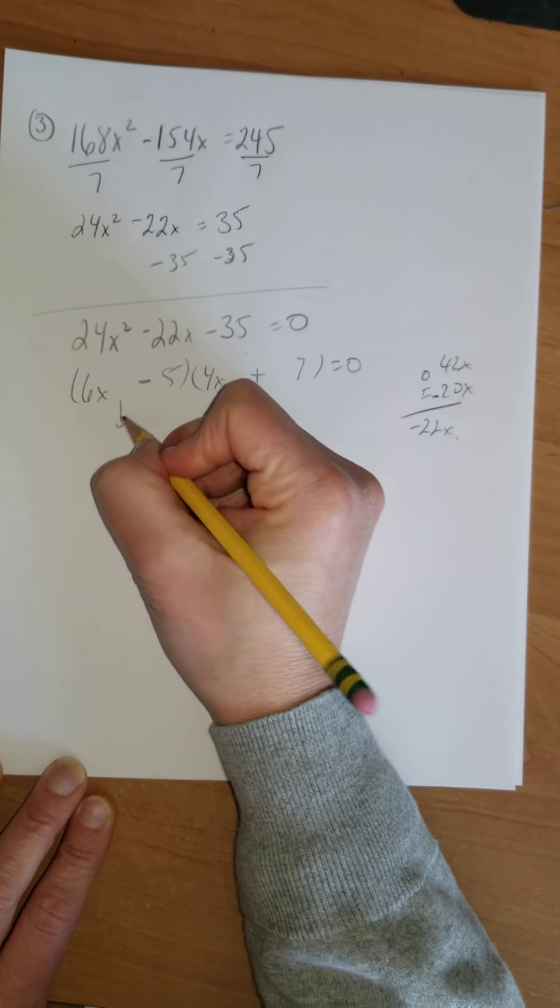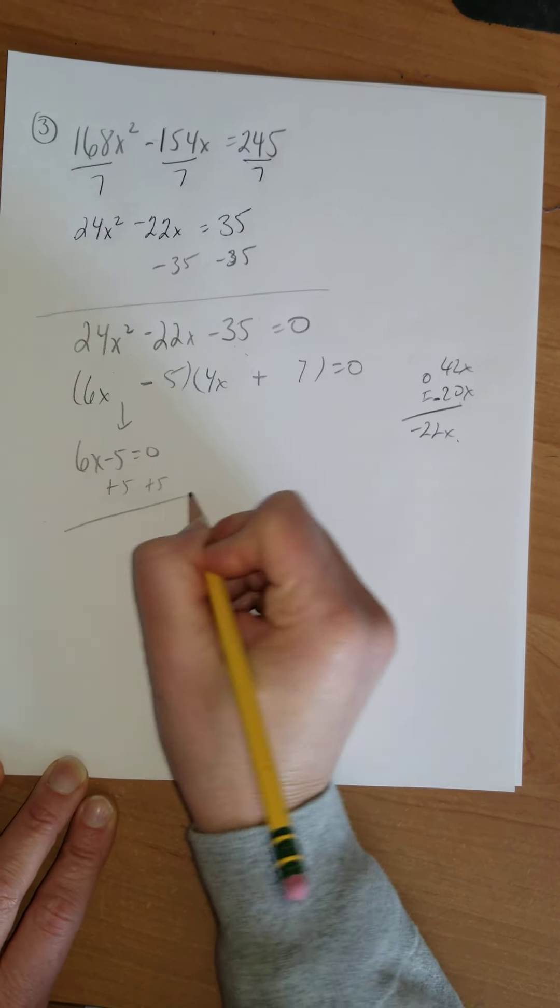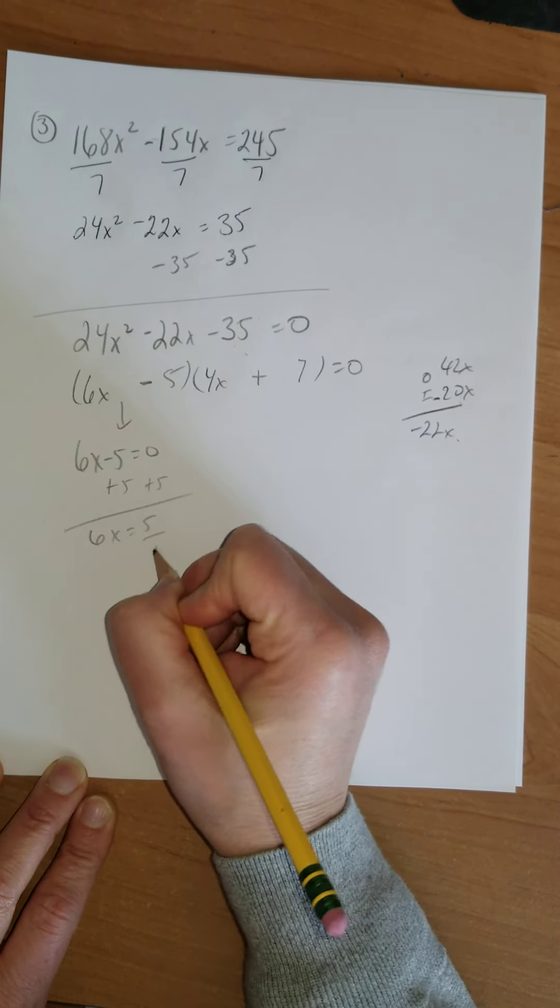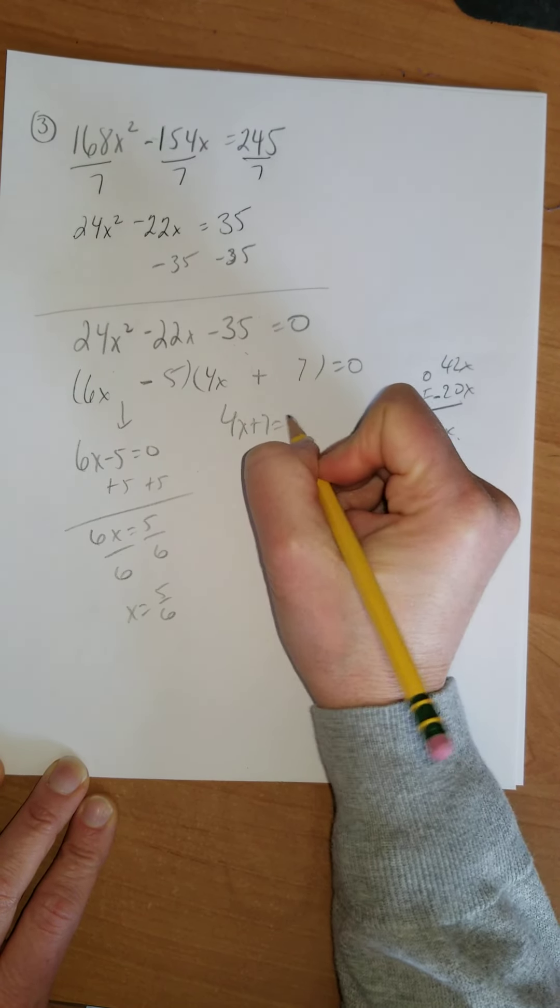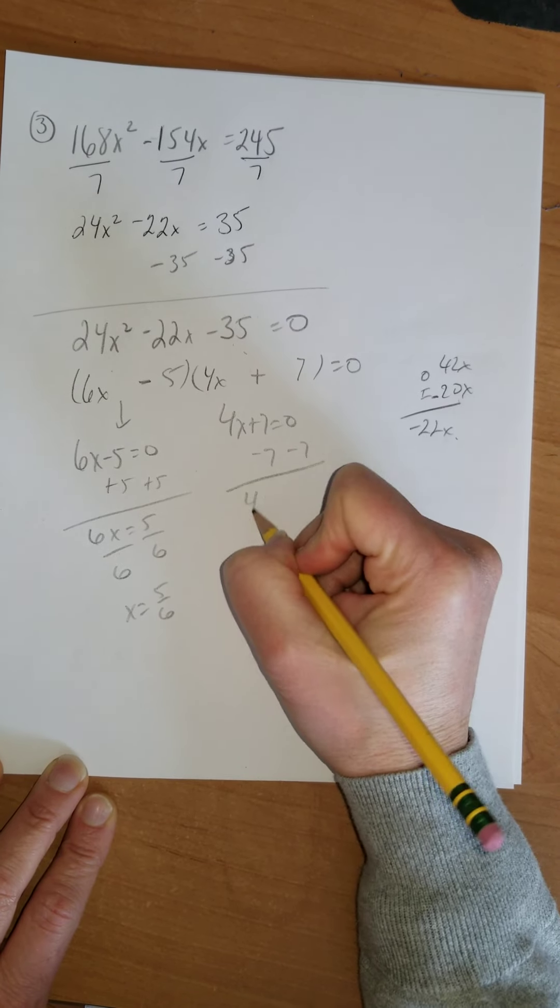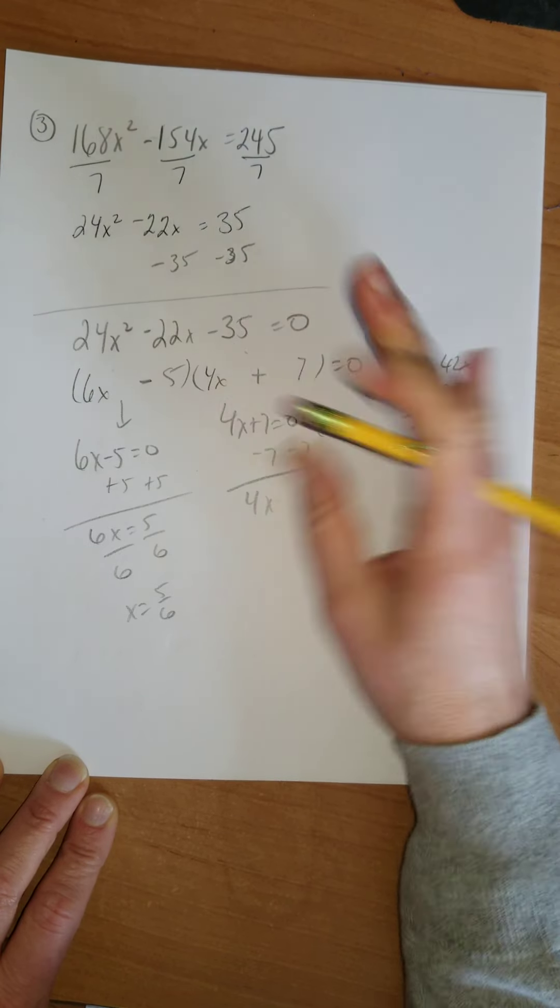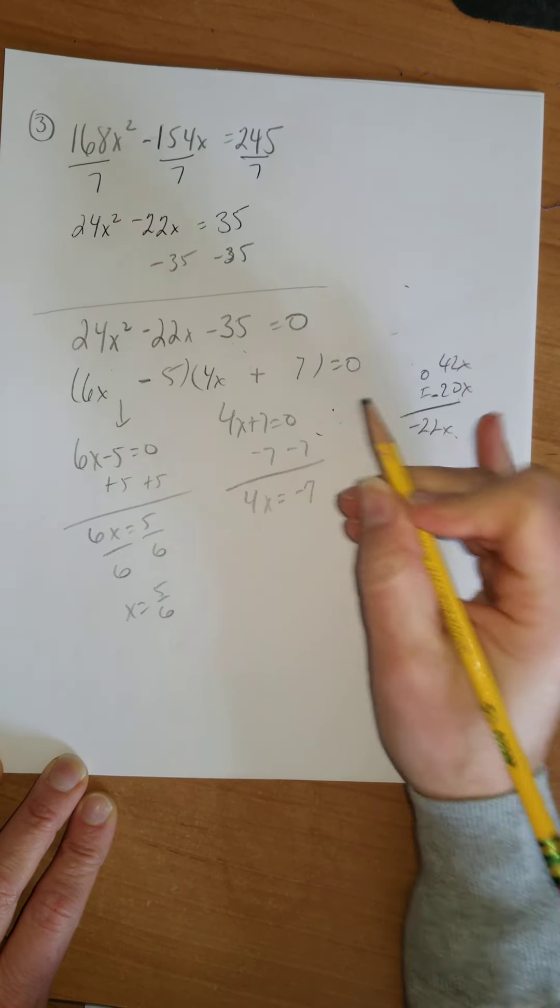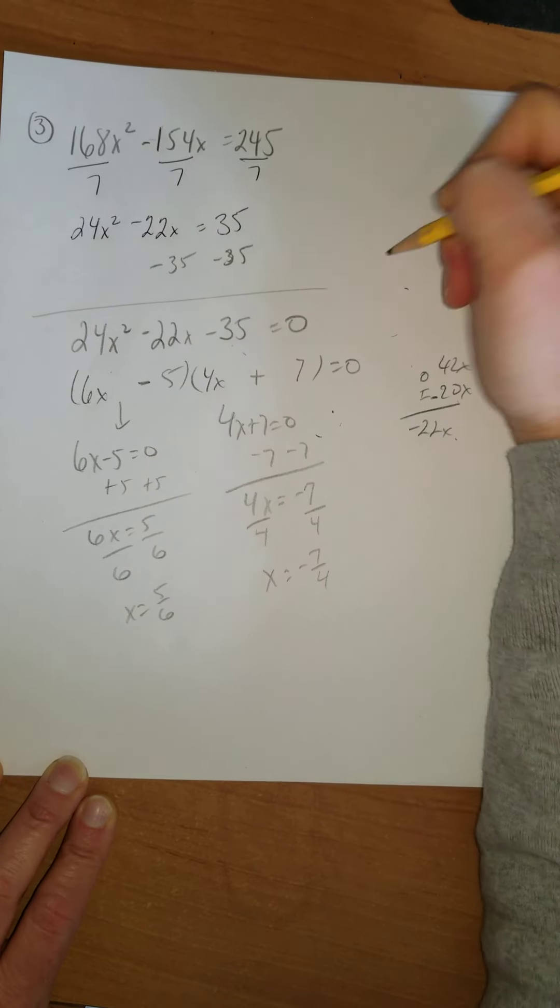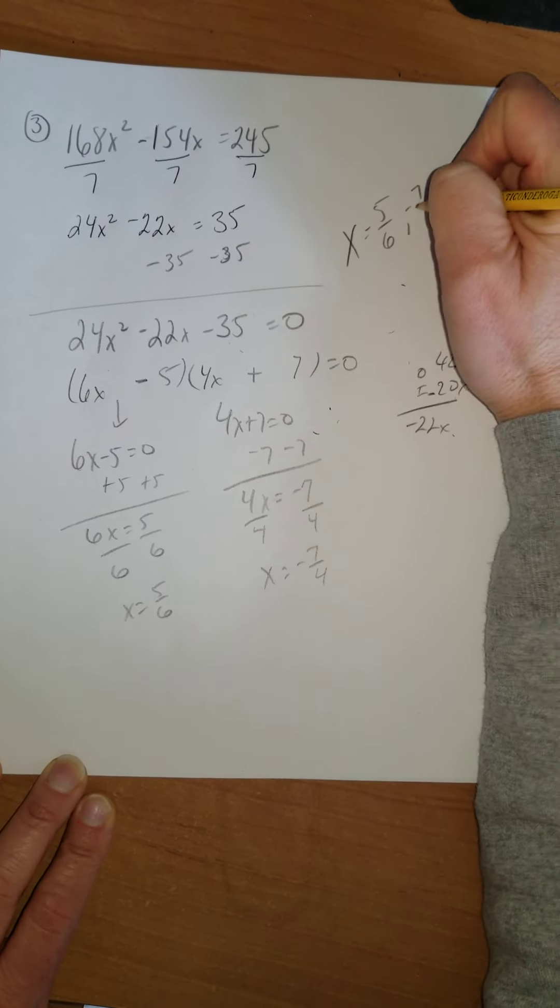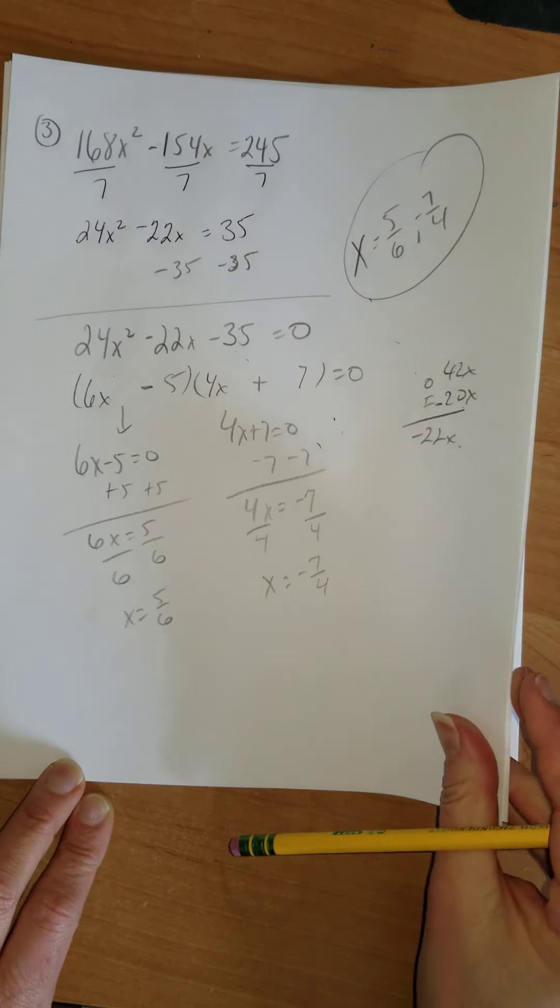So this is negative, and this would be positive, and that equals 0. This one you might want to set equal to 0. 6x - 5 = 0. So we'd add 5 and divide by 6. So x would be 5/6. And here, 4x + 7 could equal 0. So let's subtract 7. 4x equals -7. And divide by 4. So my answer would be x equals 5/6 and -7/4. So I'm feeling good about that.